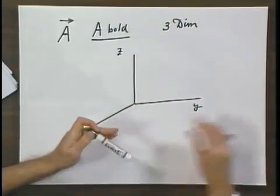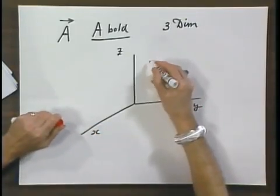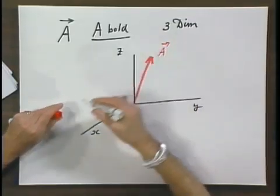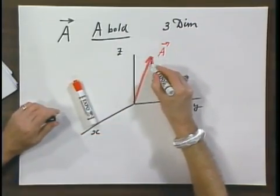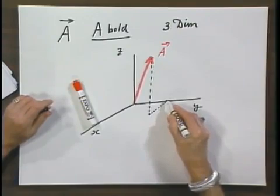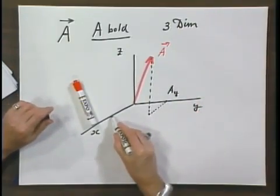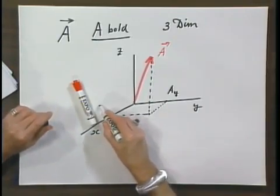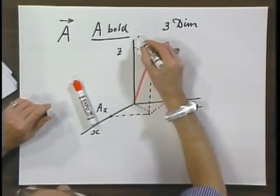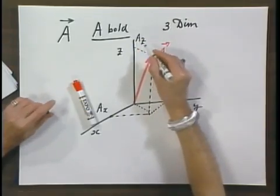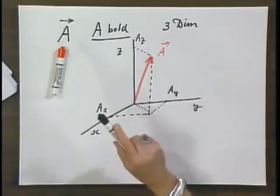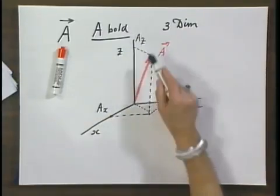And we have a vector A like so. This is A. And I will project this A onto the X, Y plane. And then I will further project it onto the Y axis. We call this A of Y. I project it onto the X axis, which is A of X. And I will project it onto the Z axis, which is A of Z. We call this a Cartesian coordinate system. Three numbers uniquely define this vector. The numbers Ax, Ay, and Az uniquely define this vector.